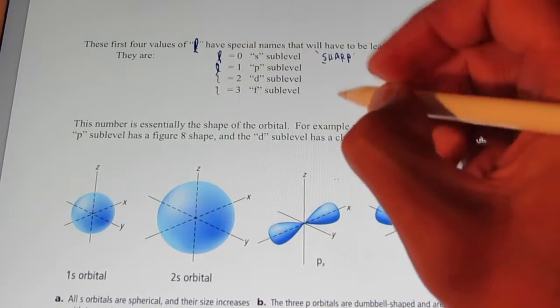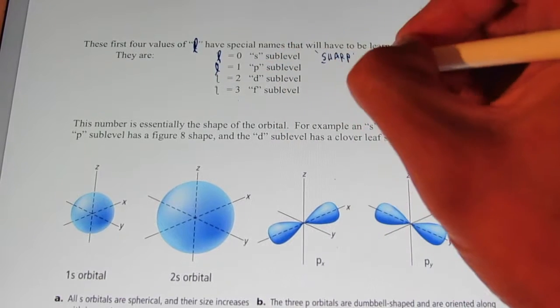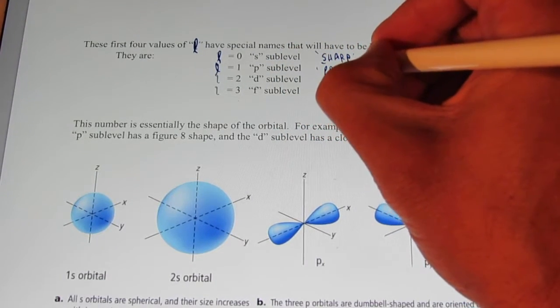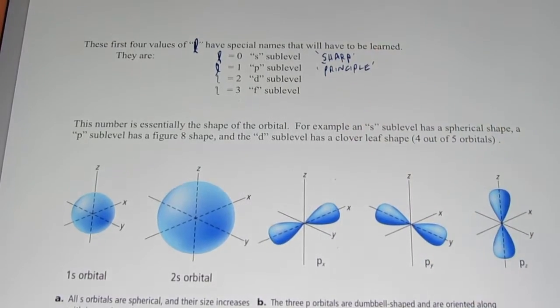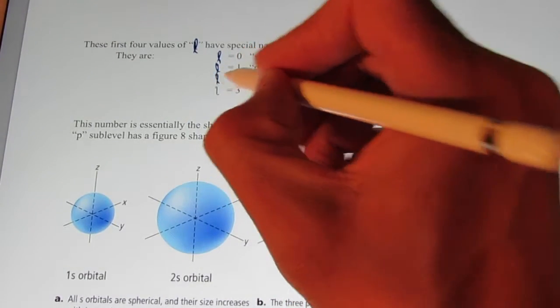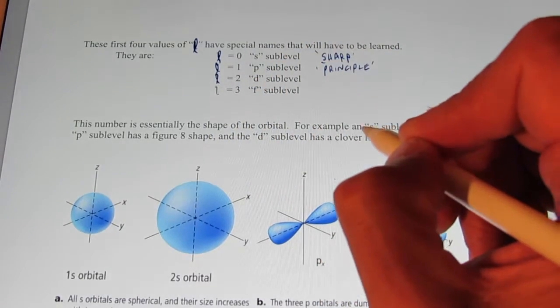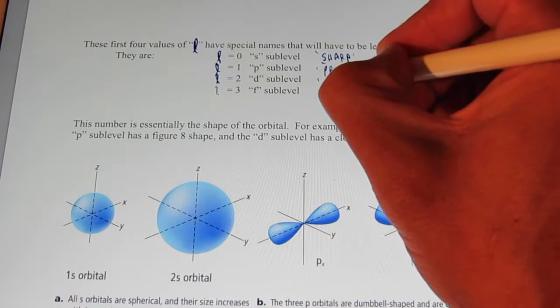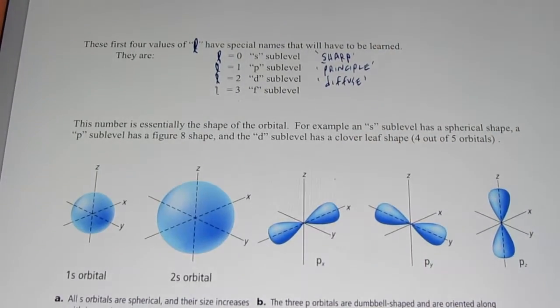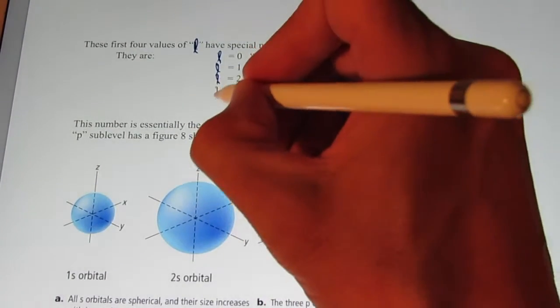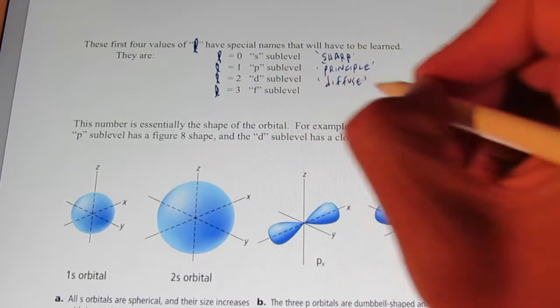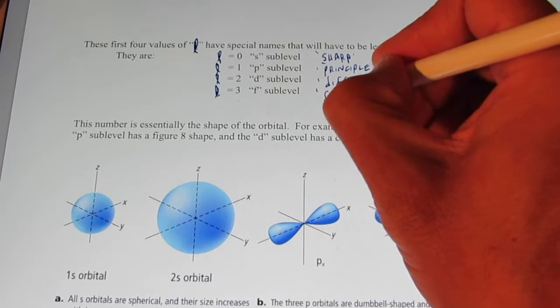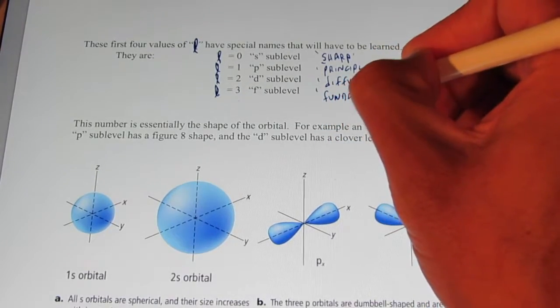When L is equal to one, we call that the P sublevel. It used to be called the principal sublevel. When L is equal to two, we call that the D sublevel. And that used to be known as the diffuse sublevel. And then finally, when L is equal to three, it became known as the F sublevel. And F stood for the fundamental sublevel.